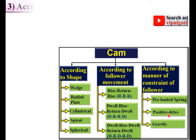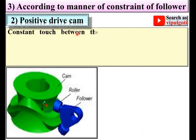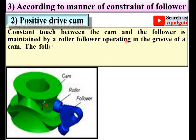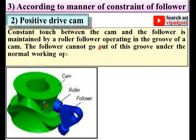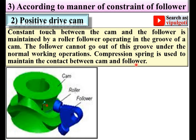Next is the positive drive cam. Constant contact between the cam and the follower is maintained by a roller follower operating in a groove of the cam. The follower cannot go out of this groove under normal working conditions. A compression spring is used to maintain the contact between cam and follower.